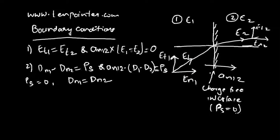When dealing with vector form problems, if you cannot solve using Et1 = Et2 or Dn1 minus Dn2 = ρs, use the vector form of the boundary conditions. Strictly speaking, the vector form is the correct form to use; the scalar forms are approximate simplifications. It is actually |Et1| = |Et2| and |Dn1| minus |Dn2| = |ρs|. Without loss of generality, we write Dn1 minus Dn2 = ρs.